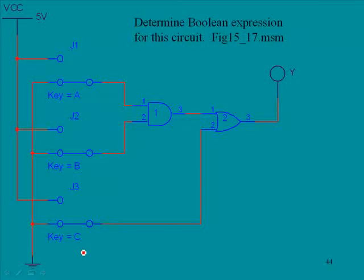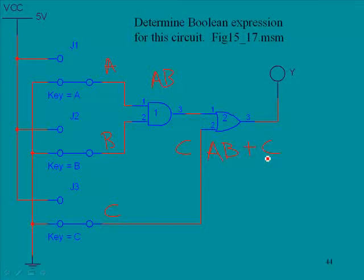First we need to evaluate the inputs: we have input A, input B, and input C. A and B come into this AND gate, so out of the AND gate we'll have AB. That then comes into this OR gate. The process, as mentioned earlier, is to start at the inputs and move to the output. So the final output of the OR gate would be AB plus C. This means if we have a valid high at A and B we get an output, and if we have a valid input from C we also get an output. This represents our Boolean expression for this circuit.